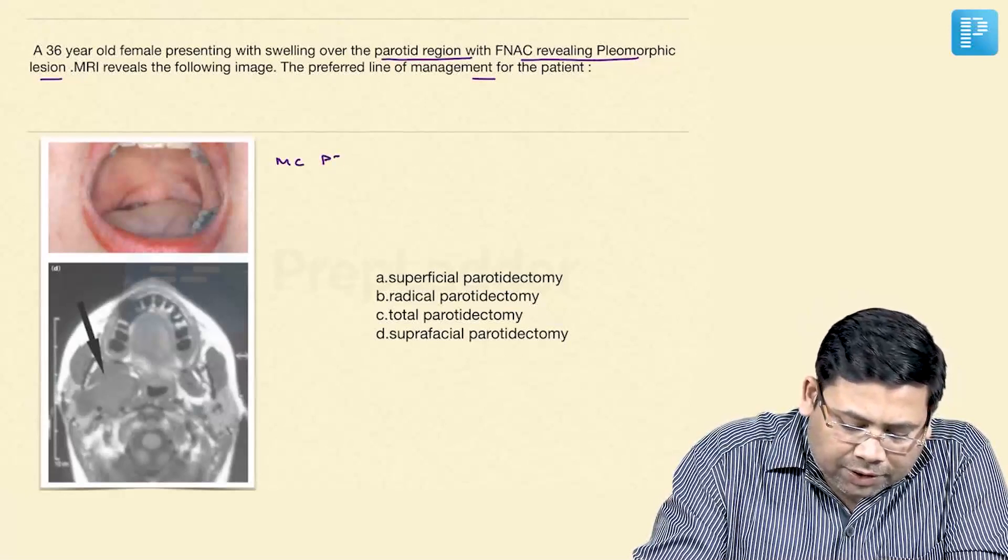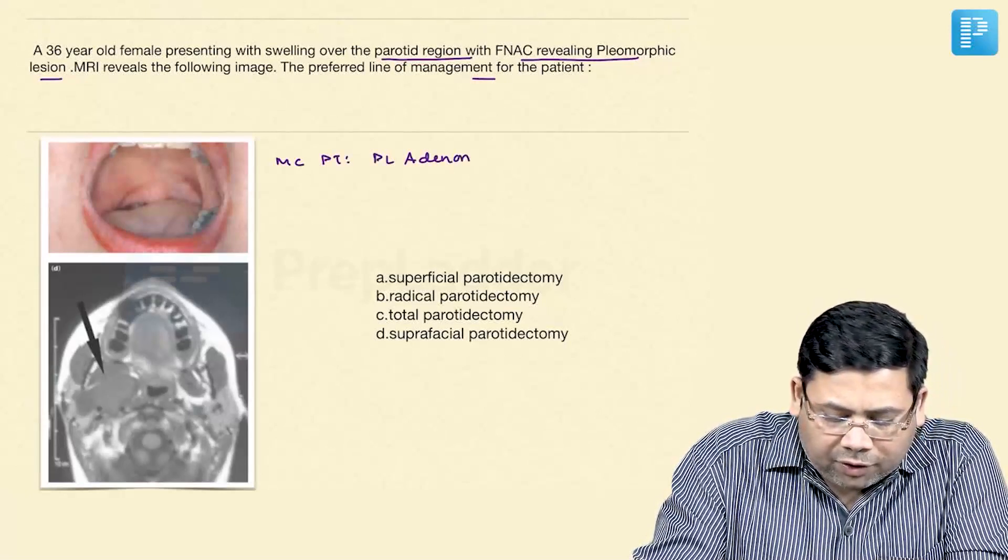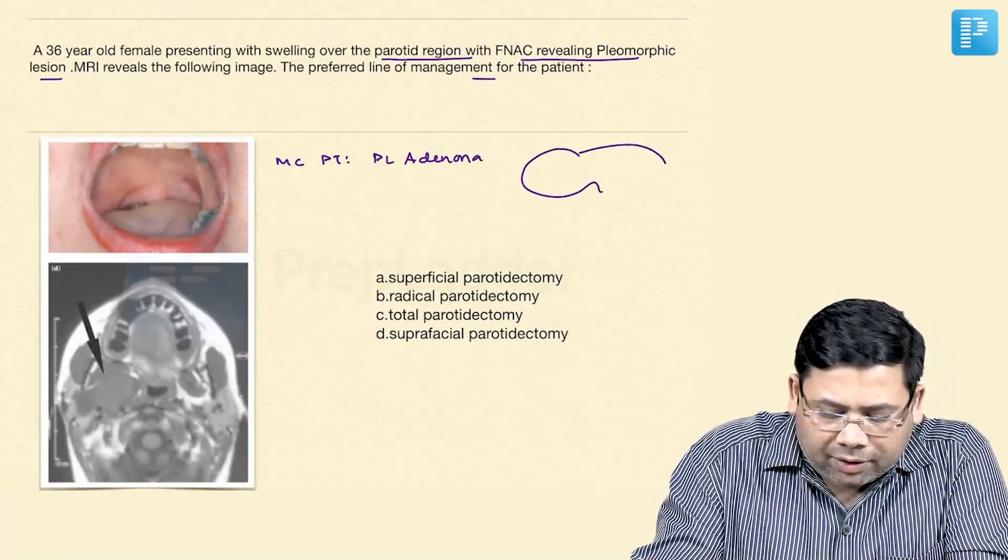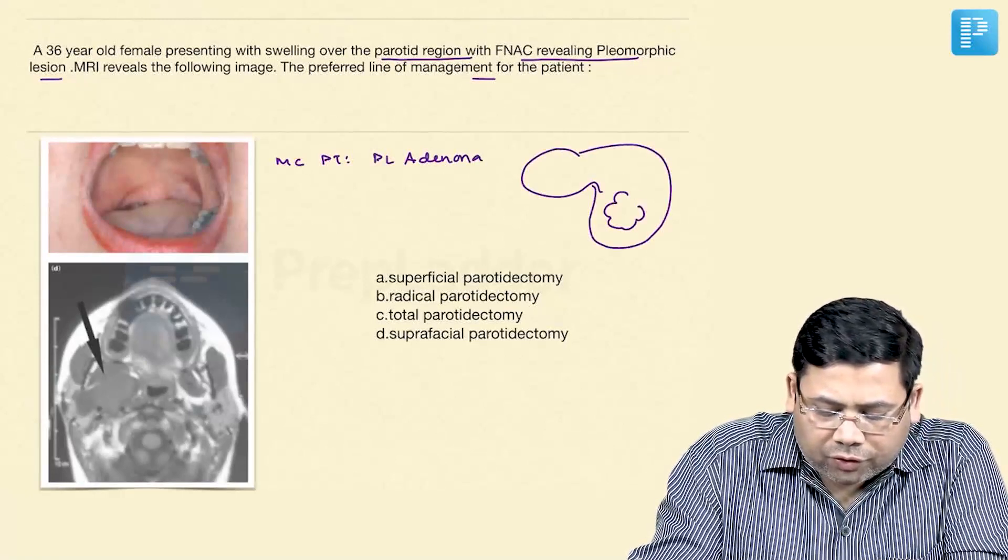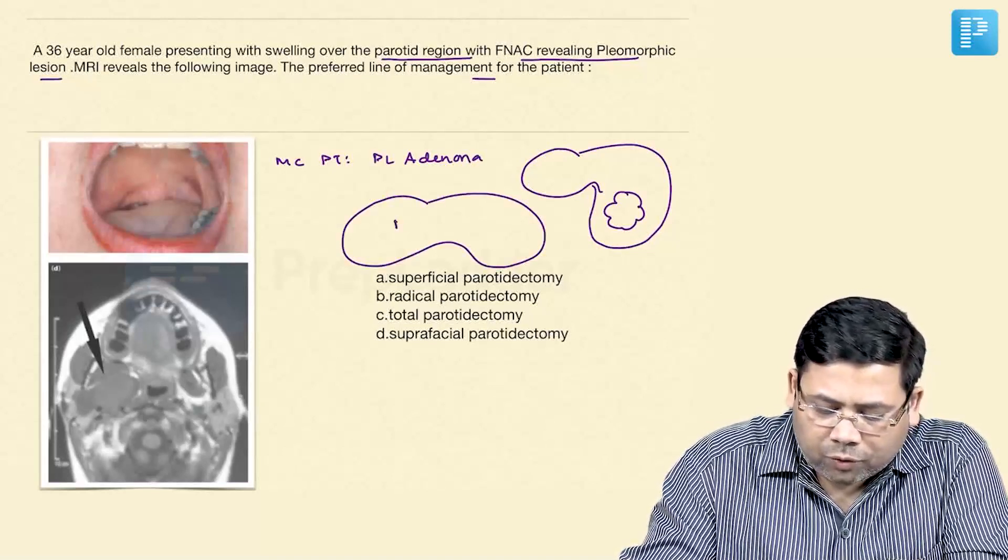The most common parotid tumor is pleomorphic adenoma. Pleomorphic adenoma can be a tumor involving the tail in majority of cases, or it may involve both the lobes.